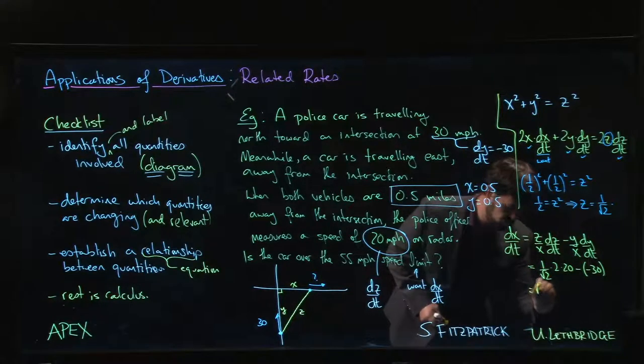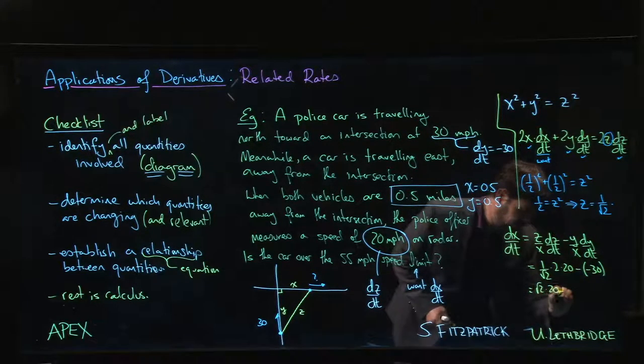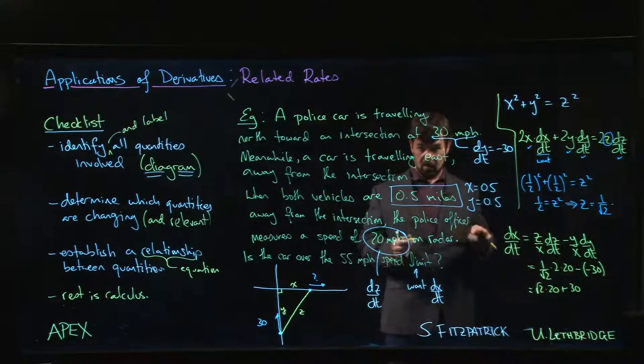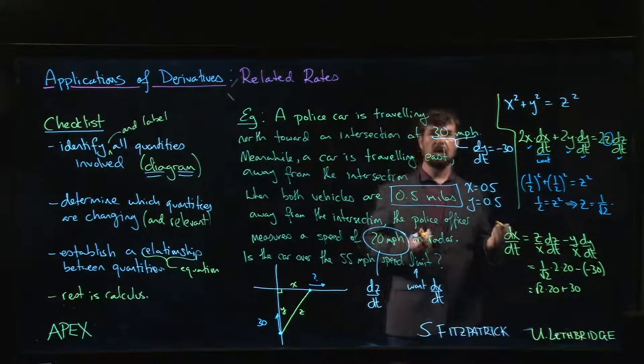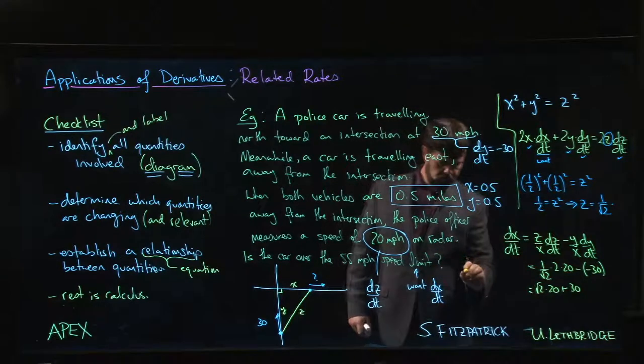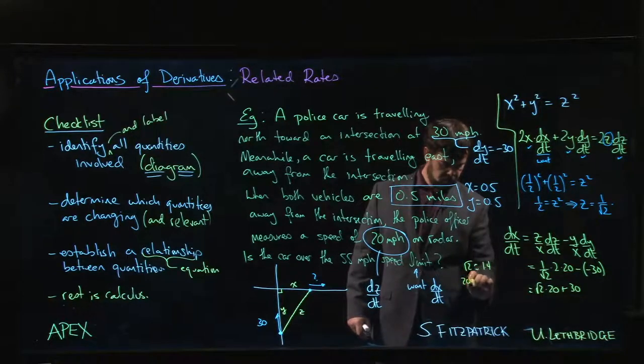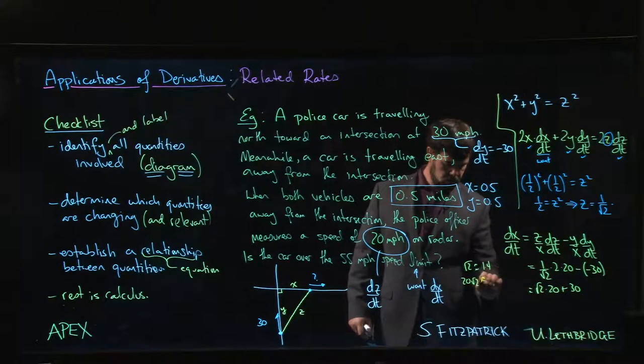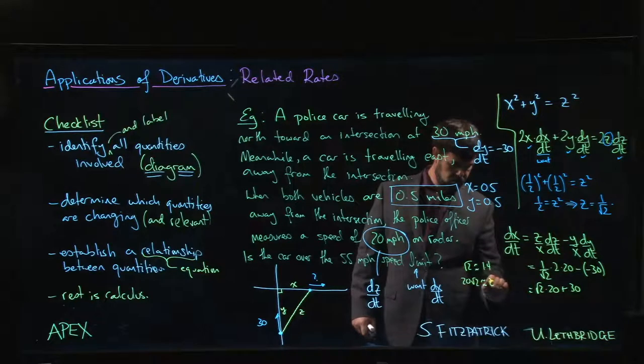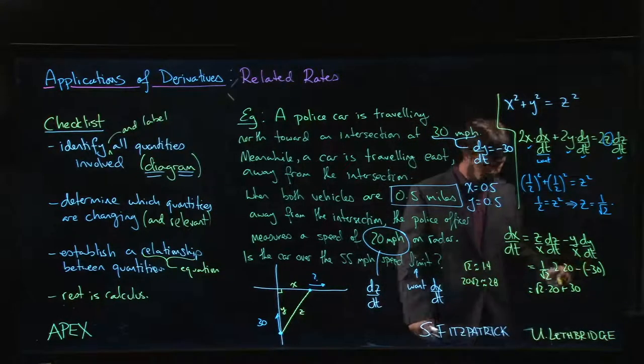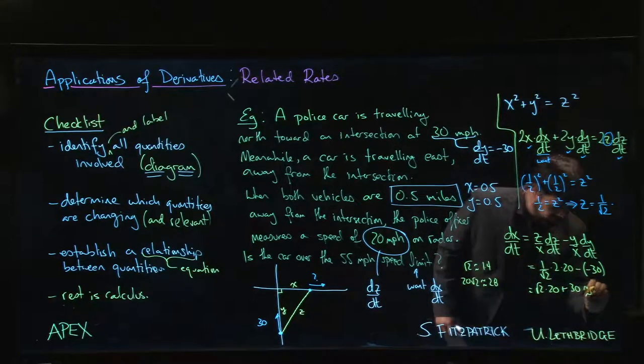We have √2 times 20 plus 30. Now we got to do a little bit of thinking. What's √2? So √2 is approximately 1.4, so 20√2 is going to be around 28. So this is going to be around 58 miles per hour.